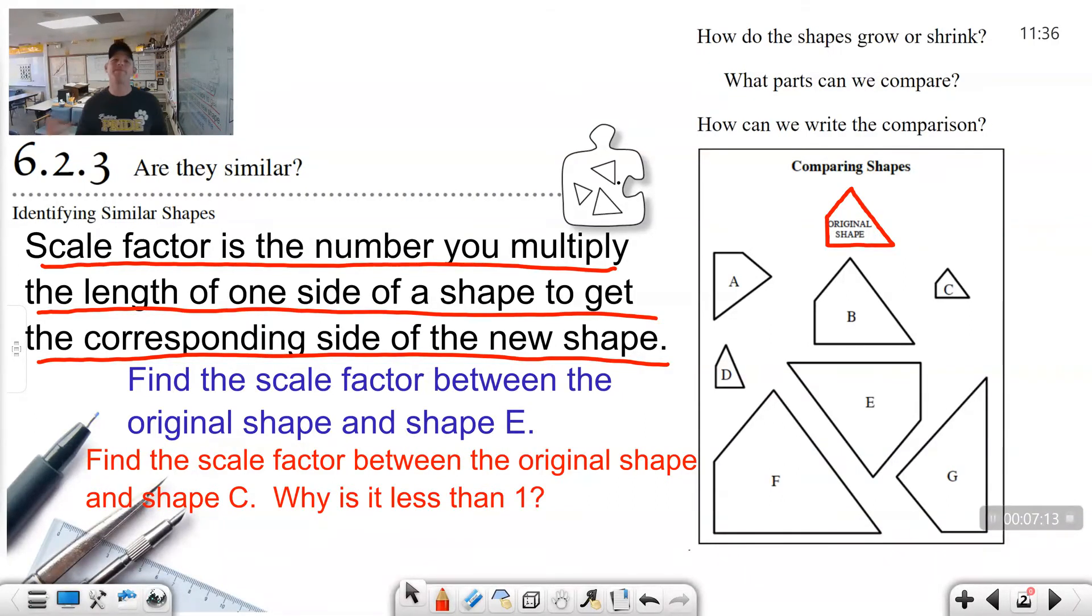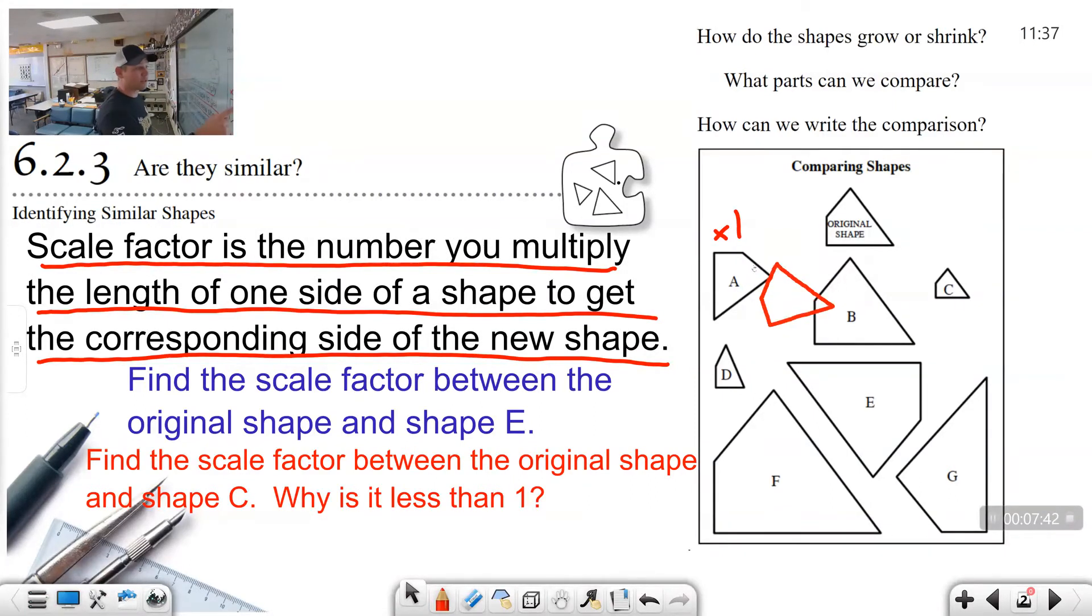Now, how do we find the scale factor? Well, if I have my original shape, and I'm going to go ahead and hover over A. If I hover over A, notice that these are exactly the same size. A is times 1. Same. When you multiply by 1, you get the same answer. 1 times 3 is still 3. So we need to go ahead and mark that down, that it is 1 time.